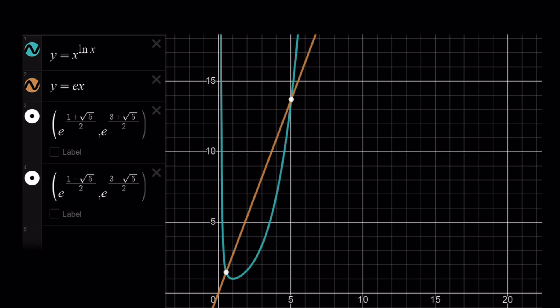It's kind of weird. As x approaches 0 from the right, obviously you're approaching, y is approaching positive infinity. And then, as x approaches infinity, of course, y is going to approach infinity. But that's kind of a slow sort of increase.